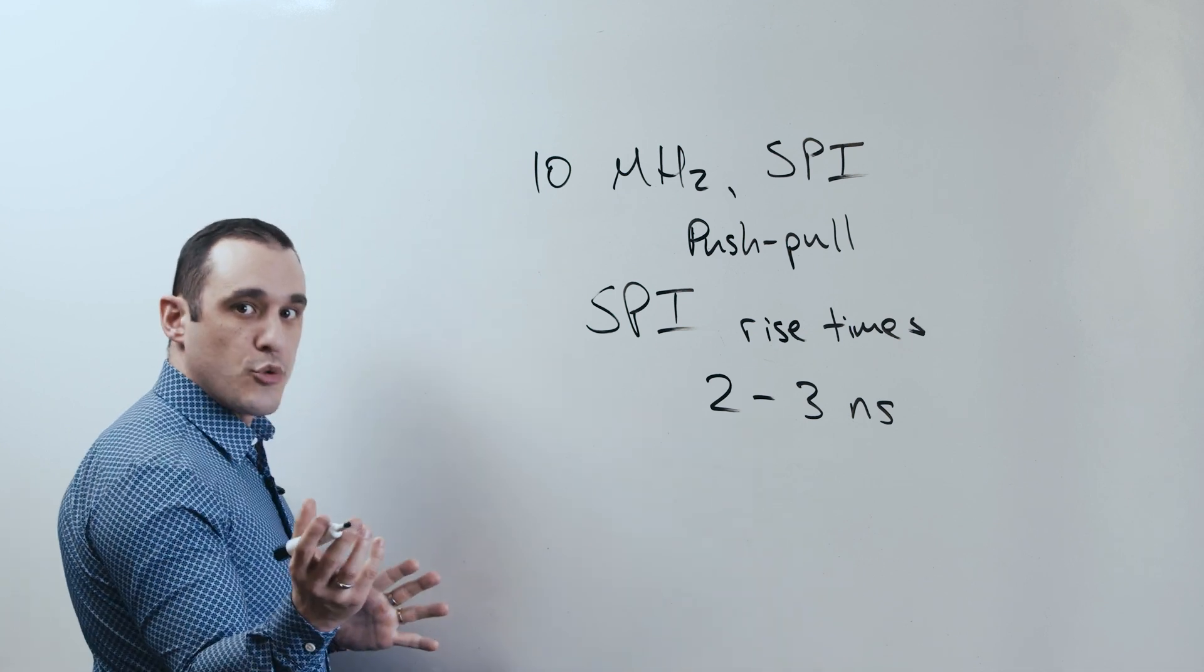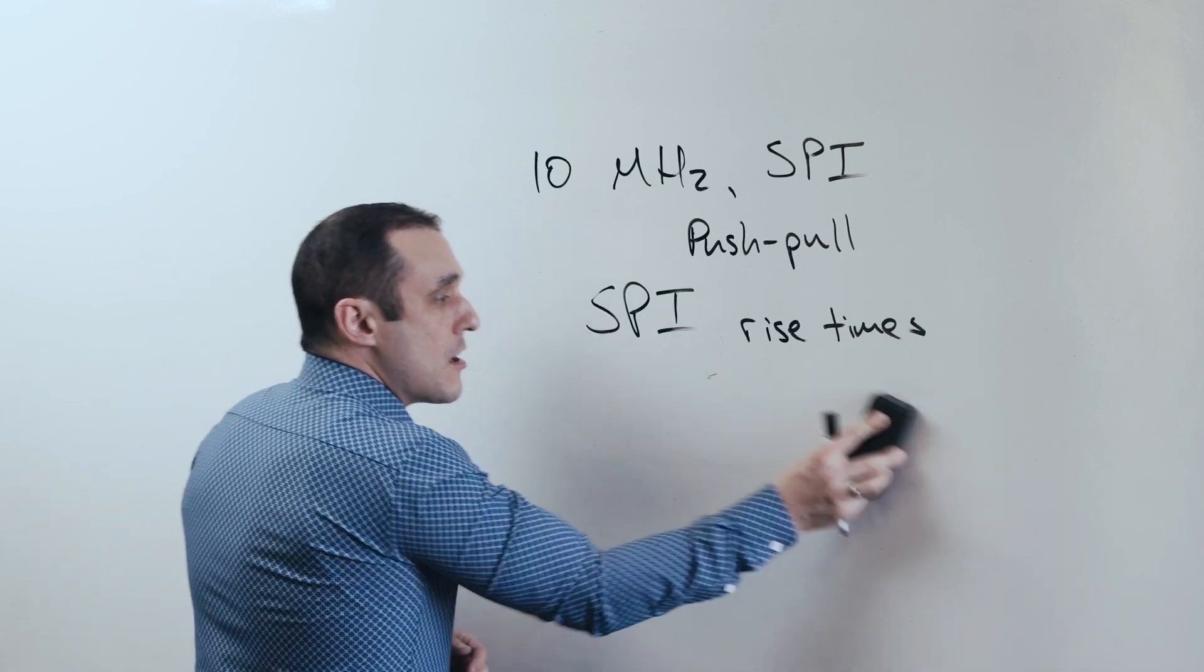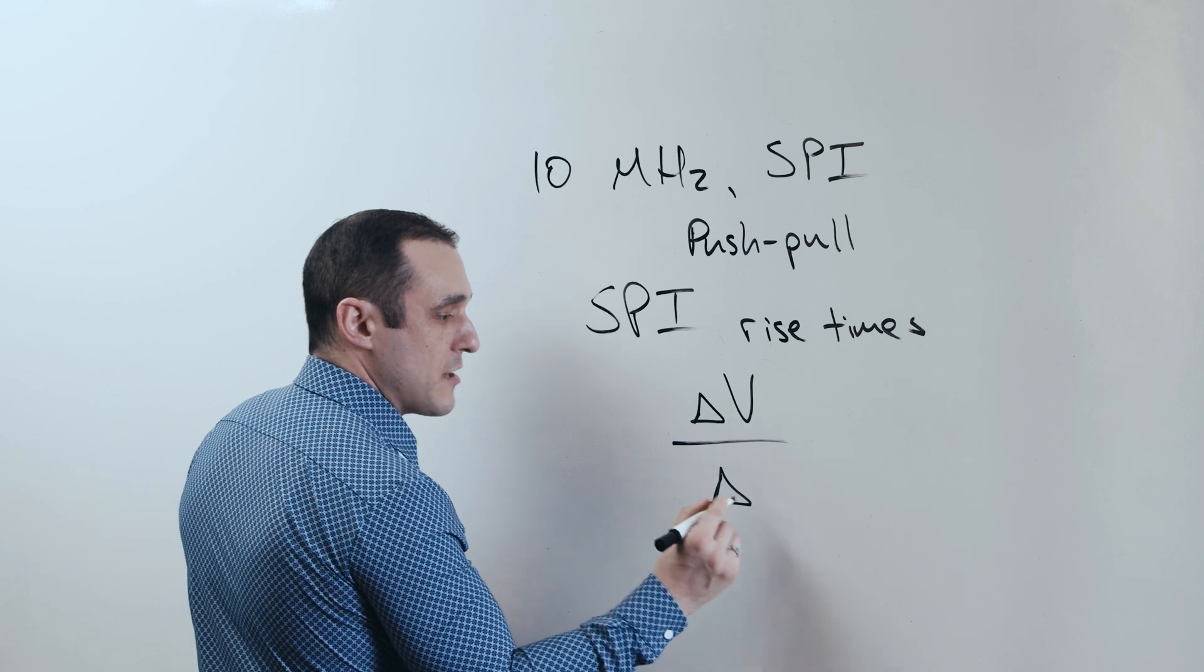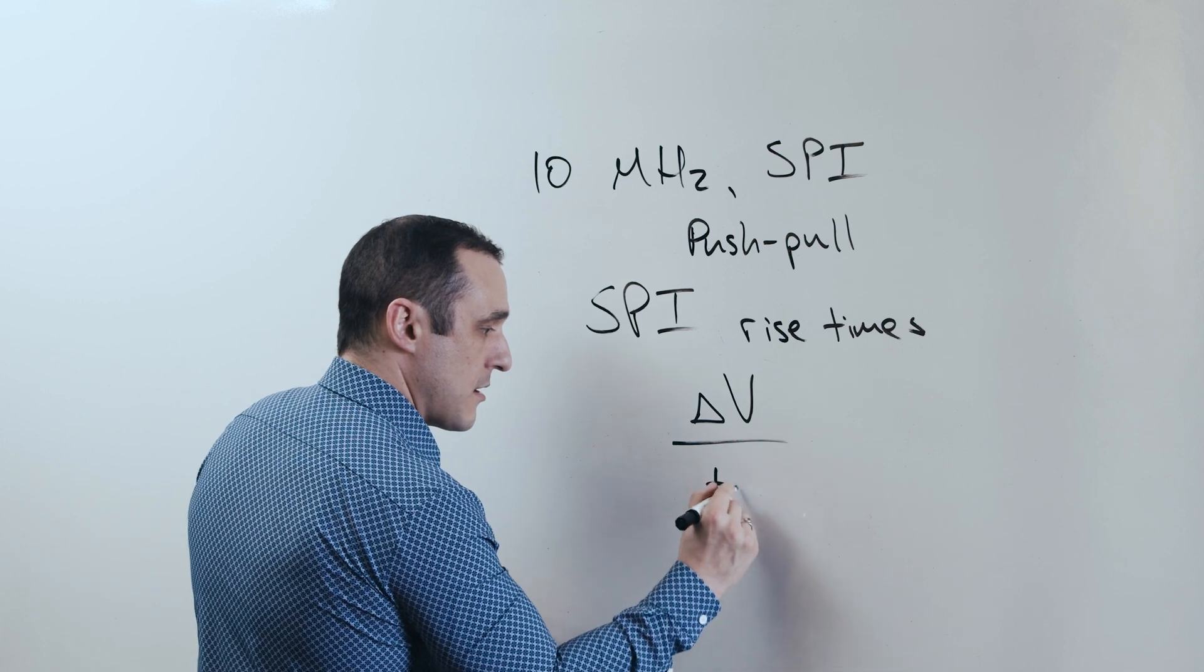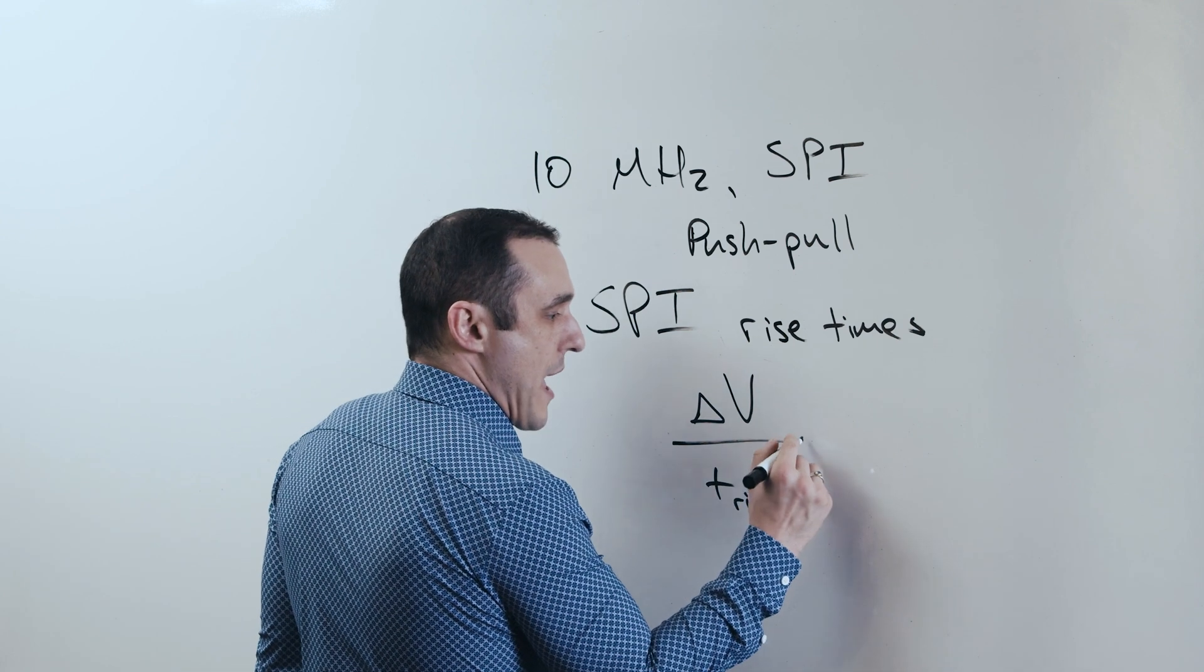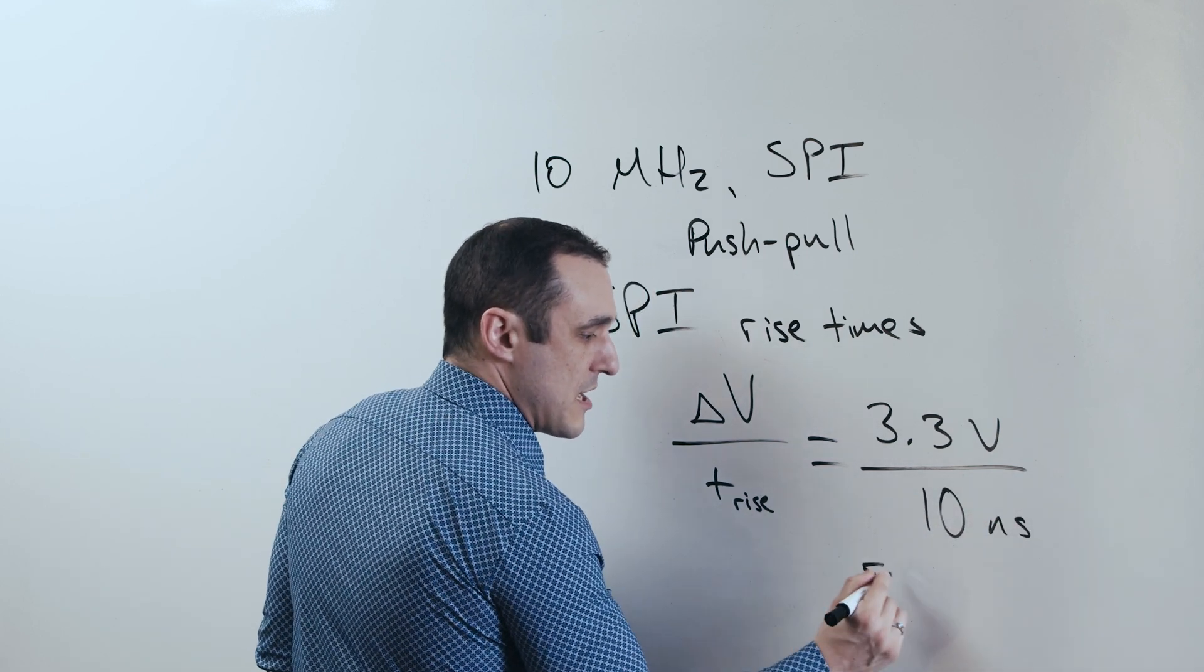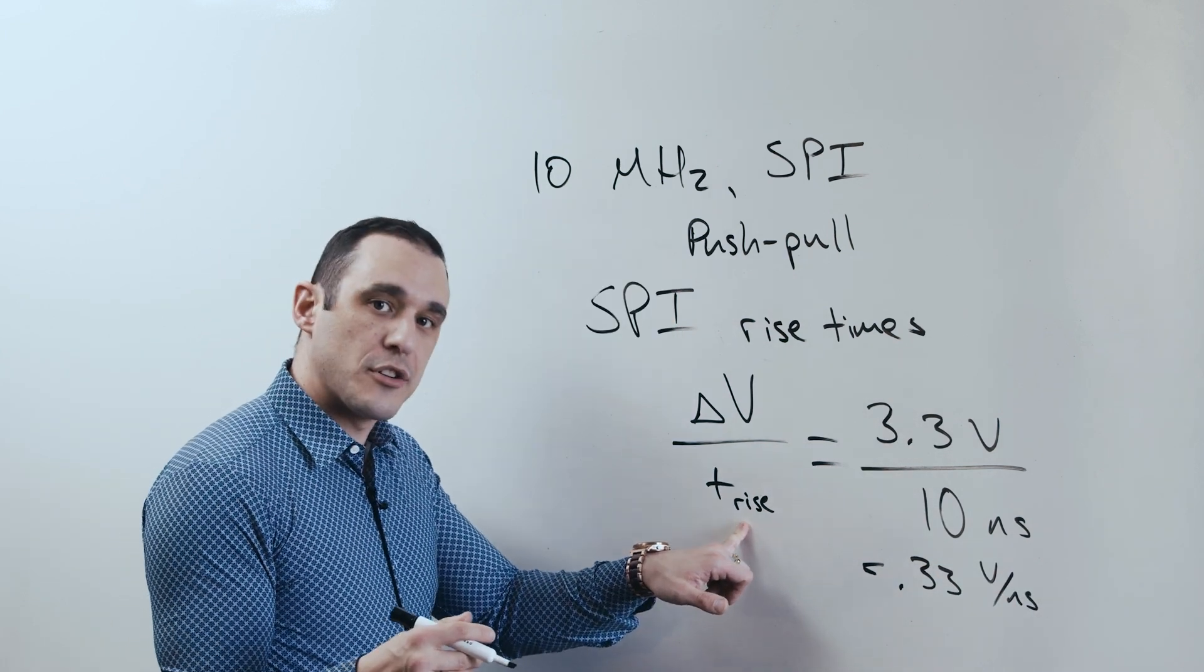Now, it's not just the rise time that plays a role. It's really the edge rate of the signal that is being output from that component. So what matters here is not just the final voltage, and it's not just the rise time. It's actually the rate of voltage change divided by the time it requires for the voltage to change. So in this case, this would be, of course, T rise. So let's just say, for example, we have a component that has to do a delta V transition of, let's say, 3.3 volts, and it's doing this in a 10 nanosecond time period. That's going to be 0.33 volts per nanosecond.